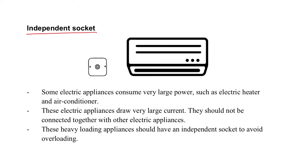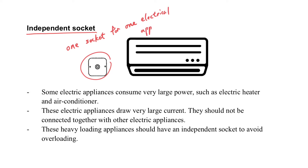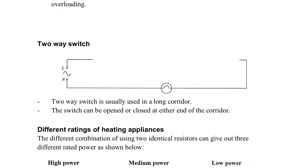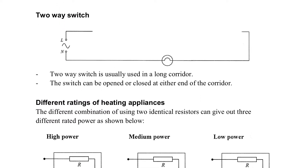Let's see some interesting design of the socket. Firstly, it's called the independent socket. Usually, we can see it with the air conditioner. That means it's one socket for one electrical appliance, that's why we call it the independent socket. It appears together with the air conditioner because it's used for items with high power, so we don't want it to be shared with other electrical appliances.